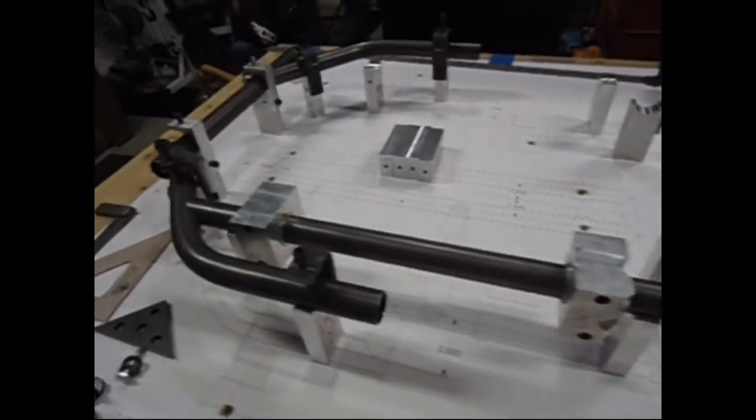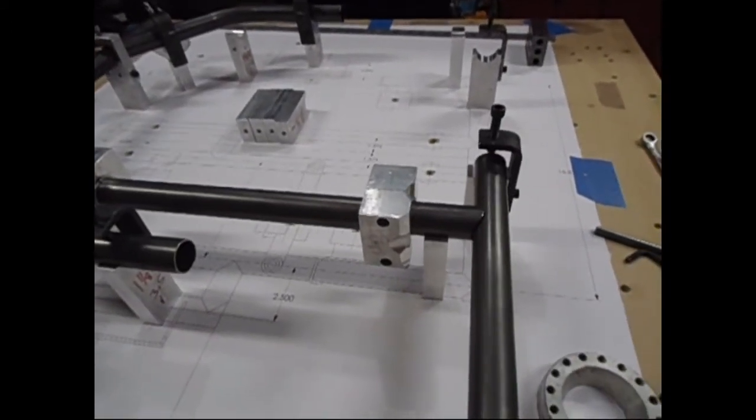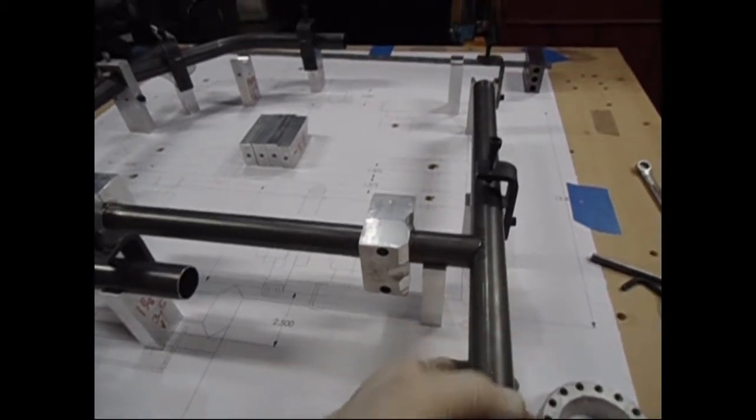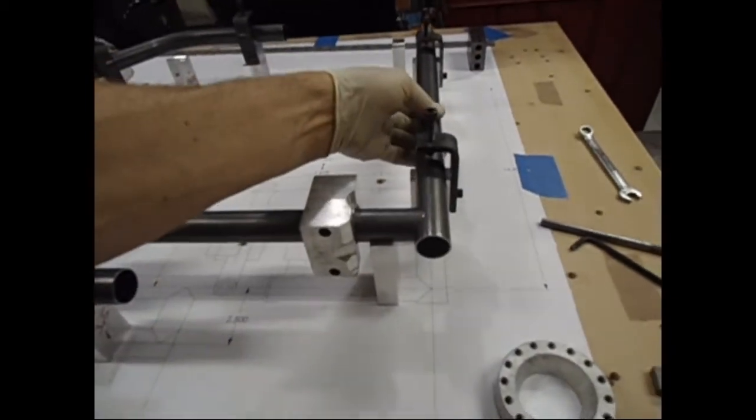I leave my blocks on while test fitting the tubes in the jig, just in case I have to put it back in the mill and take a little more off. With the blocks on, you can put it back in the mill without losing your reference.